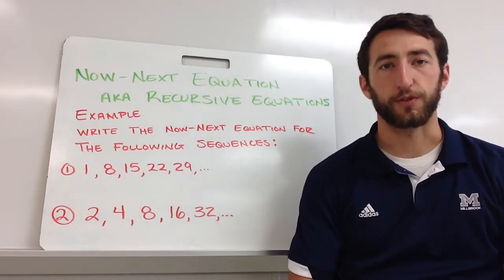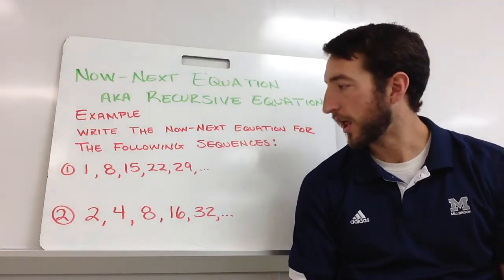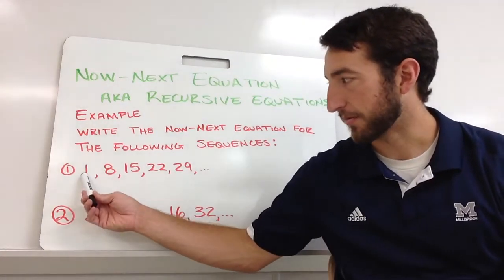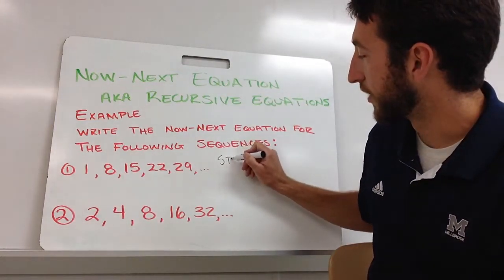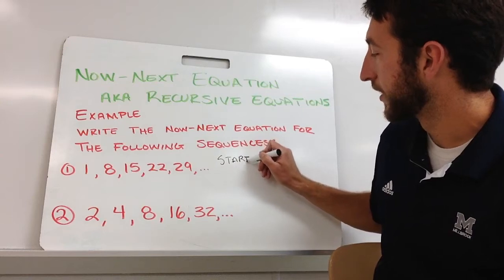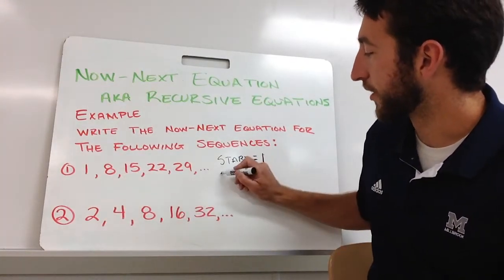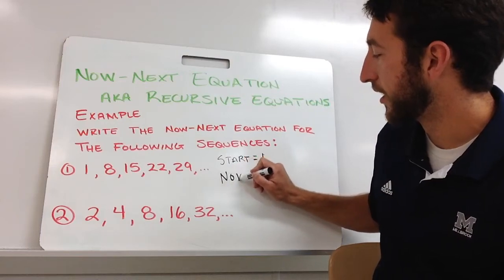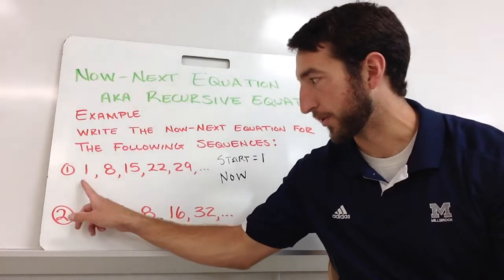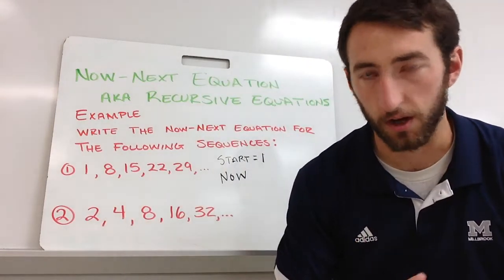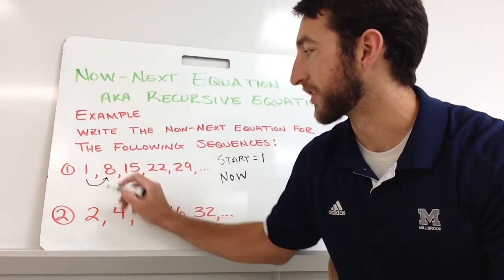What you want to do is figure out what we're doing each time to get to the next number. I take whatever I start with, so you always have to write your starting spot. You're going to write start equals whatever we start with, which is 1. Then we're going to say now, so you're taking whatever number you're looking at now. What am I doing to that number to get to the next one?